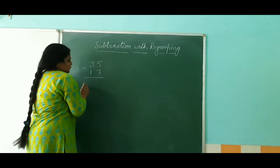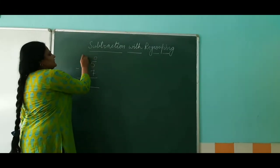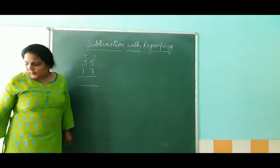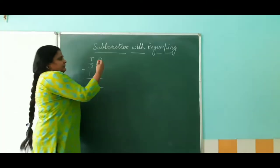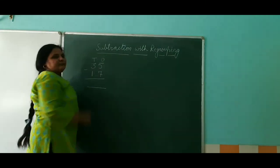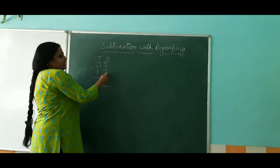Now you know that this is ones and this is tens, right? So when we have to subtract from ones, out of 5 we have to give 7, and it is not possible.